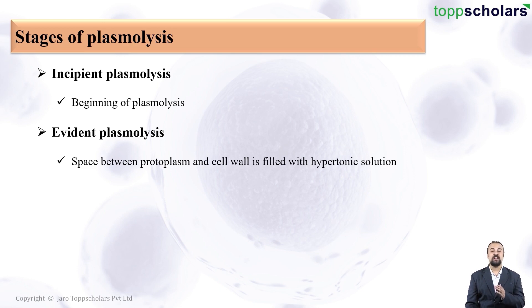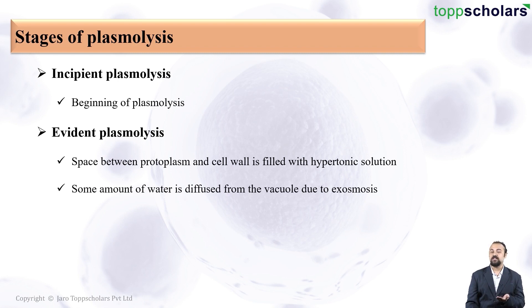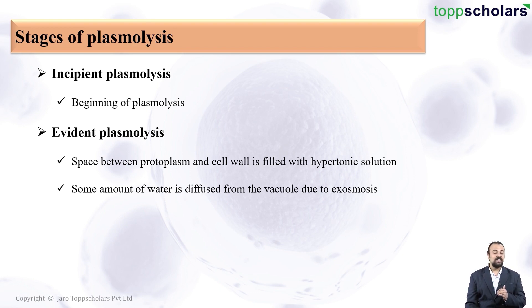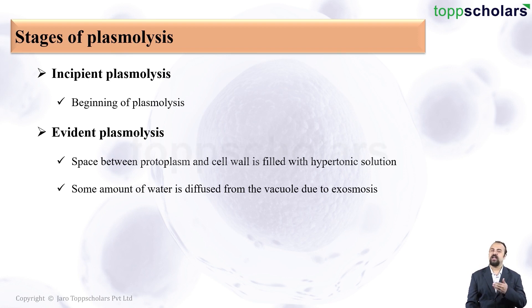As there is hypertonic solution between the protoplasm and the cell wall, some amount of water is diffused from the vacuole due to exosmosis. Exosmosis is the movement of water outside the cell due to osmosis. Finally, after evident plasmolysis, the cell becomes completely plasmolyzed.